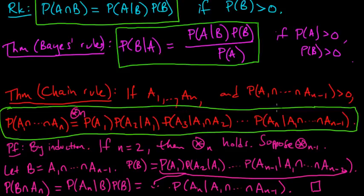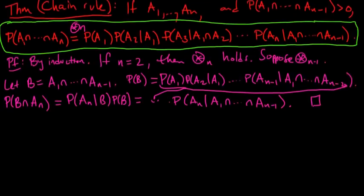So the chain rule, let me just mention briefly, this is often useful when you have certain conditional independence properties. For example, if a3 is conditionally independent of a1 given a2, or more generally, if a1 is conditionally independent of a1 up through a1 minus 2 given a1 minus 1, then you can drop all these, and that's what happens in what's called a Markov chain. So you get a very nice factorization of the probabilities that simplifies your life considerably.